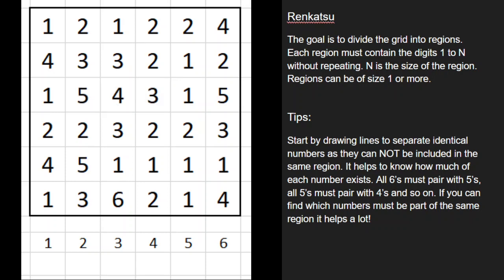So you can have some very big regions, some very small regions, and so forth. What I'm going to do is try to solve this puzzle for you guys, and I'll share some common tips and tricks along the way that will hopefully make it easier for you to solve this type of puzzle yourself in the future. The first place I would start is just by drawing borders between any repeating digits.